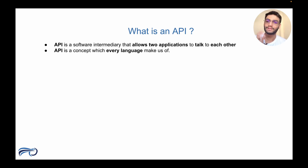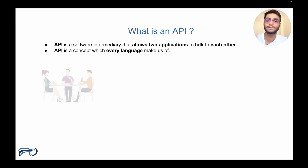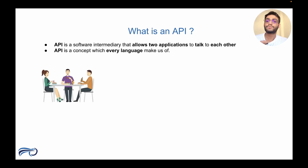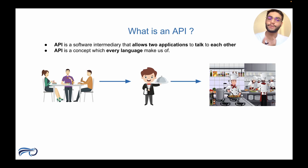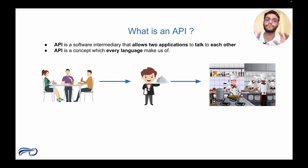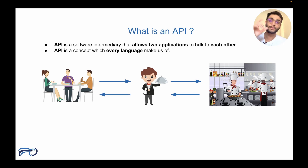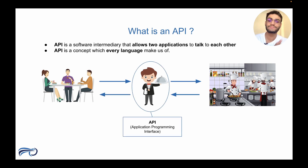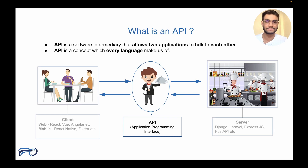To understand what is an API, let's understand it with an example. Imagine that you are sitting in a restaurant and you order some food. To order food, you give the order to the waiter, the waiter takes your order to the kitchen, the kitchen cooks the food, and once the food is cooked, the kitchen tells the waiter to bring it to the customer. The role the waiter plays here is the same role the API plays between two applications.